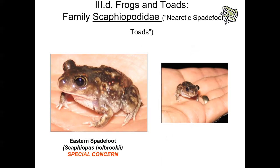The first family is Scaphiopodidae — the Nearctic spadefoot toads. They're named for a small circular or sickle-shaped hardened keratinaceous structure on each hind foot that forms a spade. They're transitional between frogs and toads: skin is warty but not as warty as a toad, and smooth but not as smooth as a frog. They also have vertical pupils and lack a really prominent parotoid gland. The most distinctive feature is that keratinaceous tubercle on the outer edge of each hind foot — check the reference guide for a good photo.